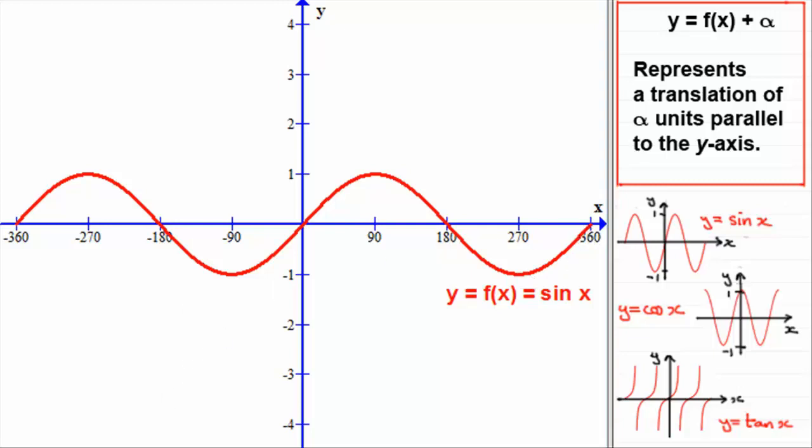So, let's have a look at this graph: y equals f of x plus one. I'm adding one to whatever f of x was. f of x in this case was sin x. So, I've got the new graph, y equals sin x plus one. So, you'll see that the alpha here corresponds to plus one. So, it's going to represent a translation of one unit parallel to the y-axis. We're going to effectively add one to any y value.